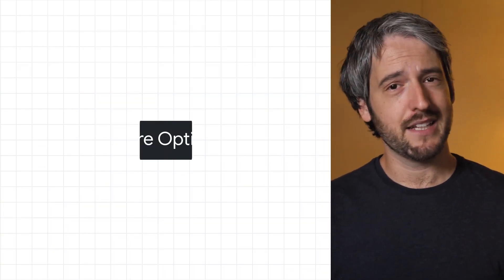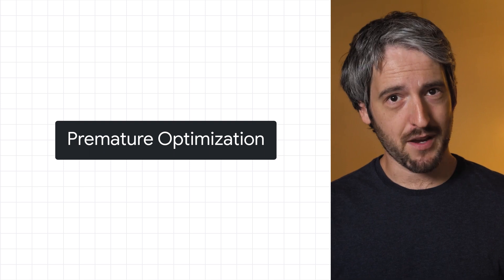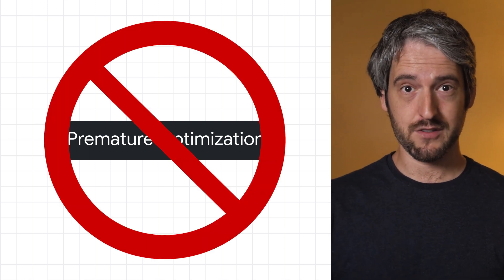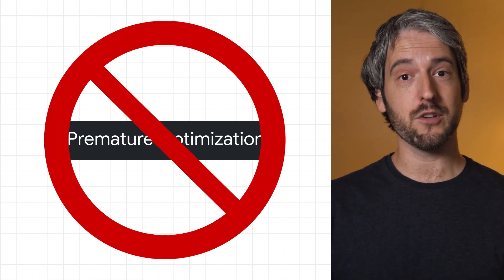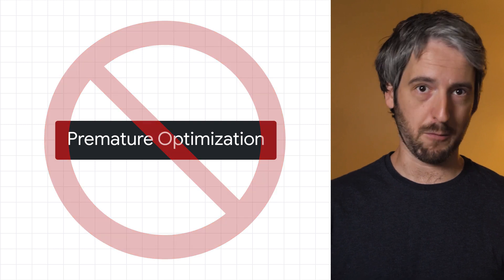Flutter apps are performant by default. For example, here's an app that orbits 100 individually painted containers around the screen, recomputing each position every frame, all in Dart and Flutter, all smooth at 60 frames per second. That is to say, don't optimize prematurely. Test first, and only if your test reveals an issue, then optimize.